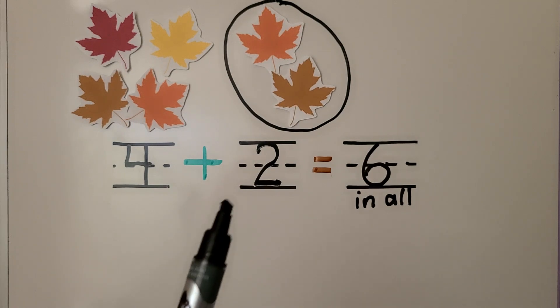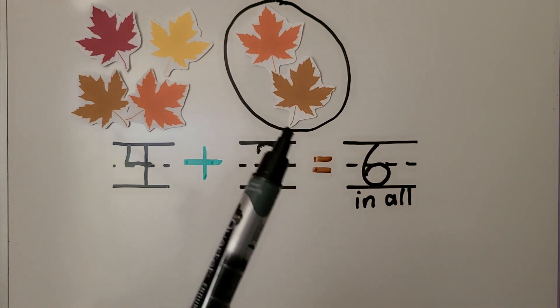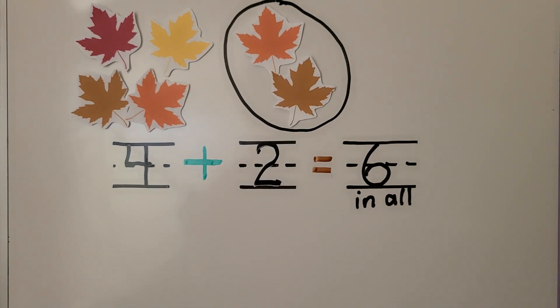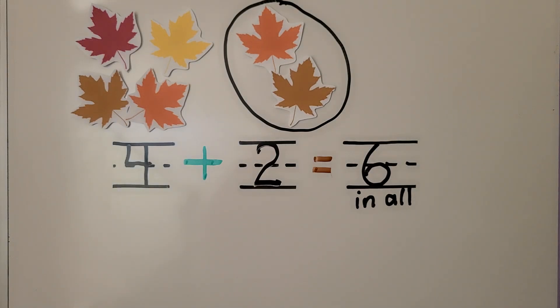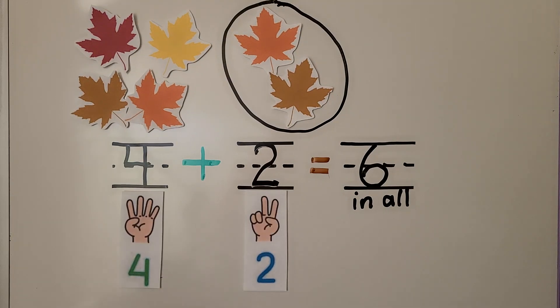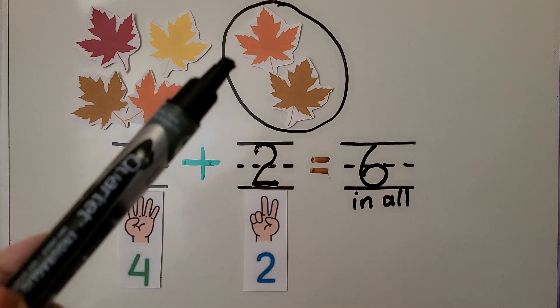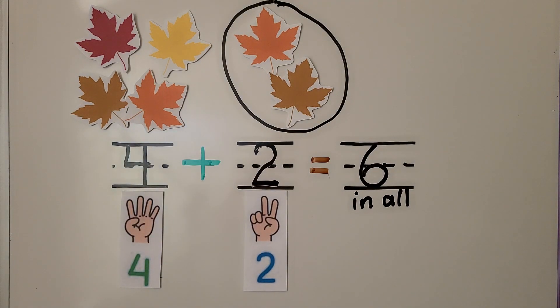We know that two leaves fell from the tree. We know two is being added to the four. There are four, five, six. Six leaves in all.